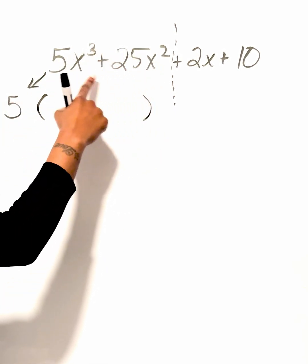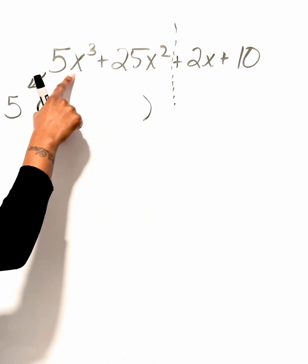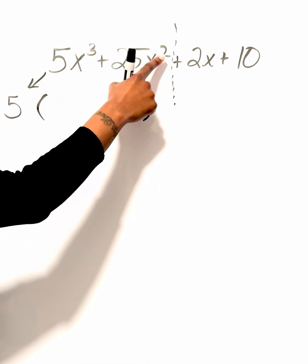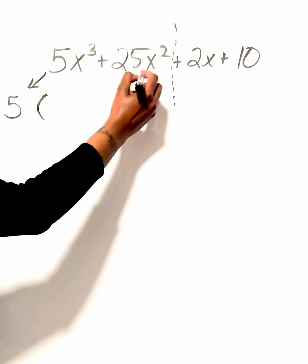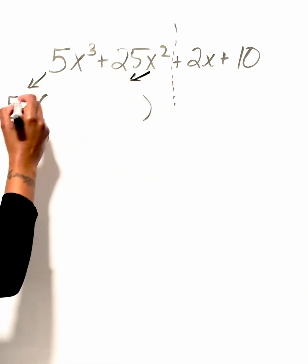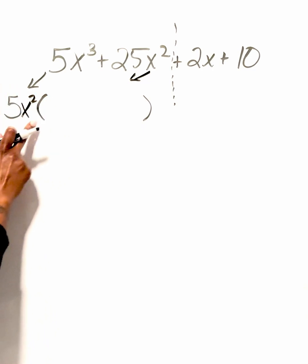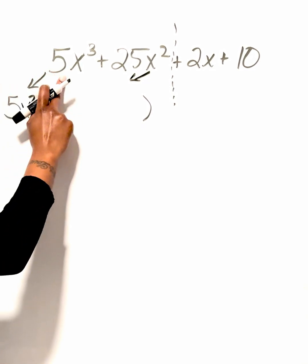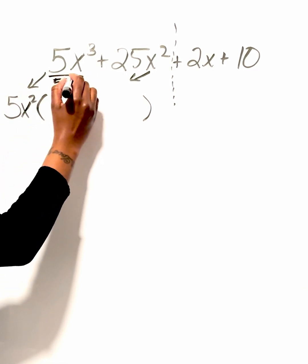When factoring out variables with exponents, you always factor out the smallest of the two. We have x to the third and x to the second — since two is the smallest, we're going to factor out x squared. Now we're going to take this term that we factored out and divide both of these terms by 5x squared.